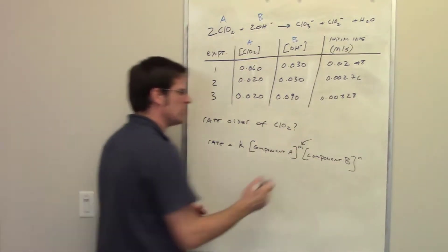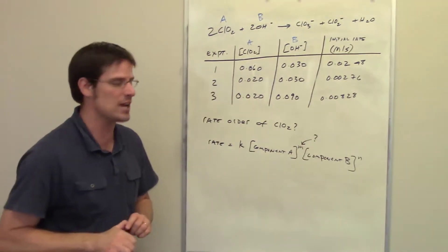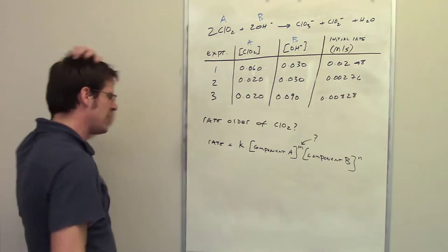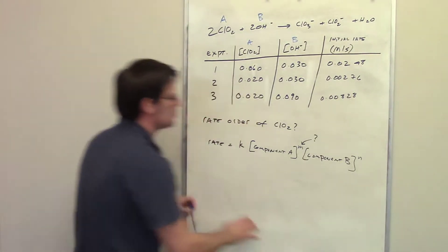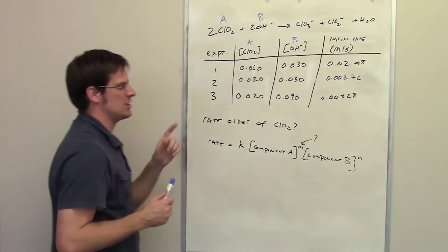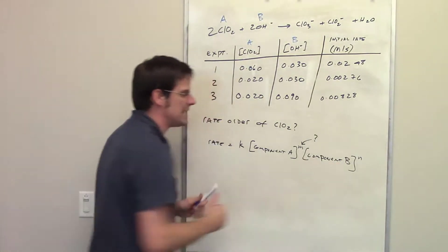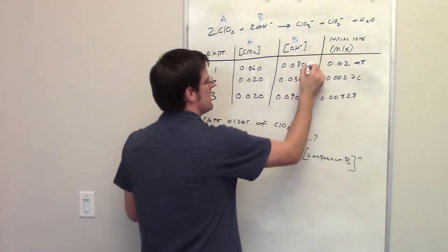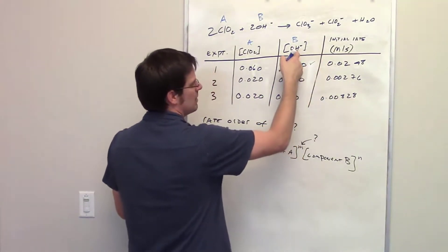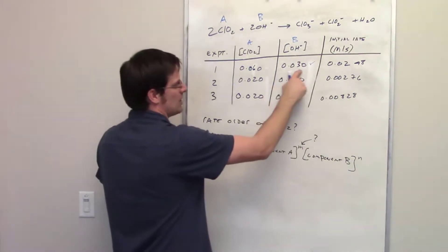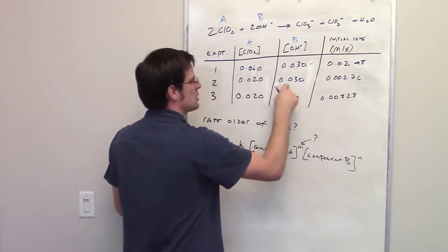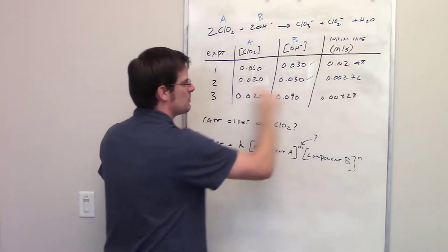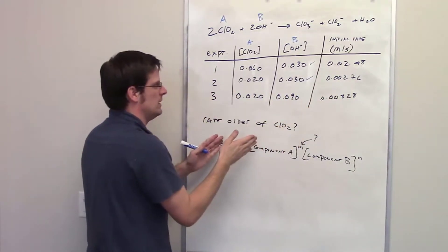M is the reaction rate order with respect to component A, chlorine dioxide. What we do is we focus in on the experiments where component B's concentration was kept the same. Looking at the table, in experiment 1, component B, the hydroxide, had a concentration of 0.03, and in experiment 2, it also had a concentration of 0.03.